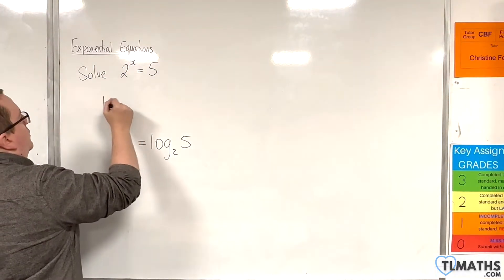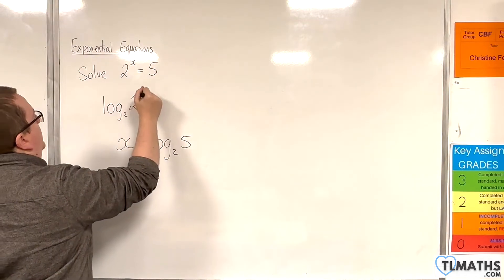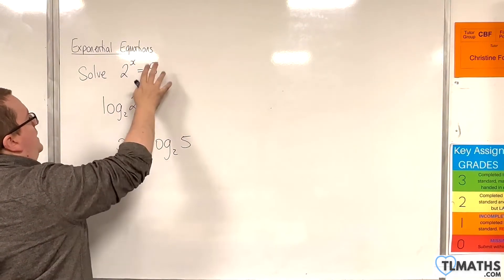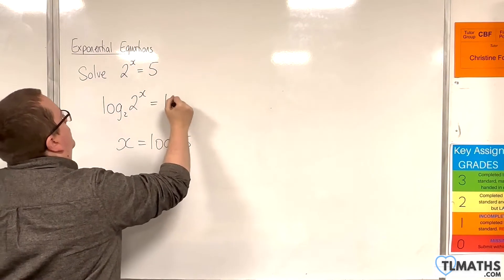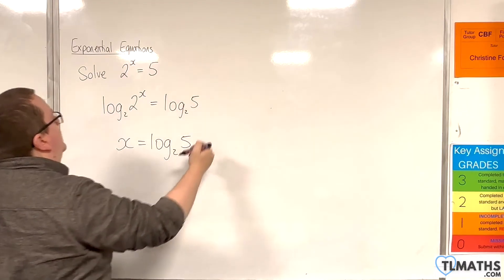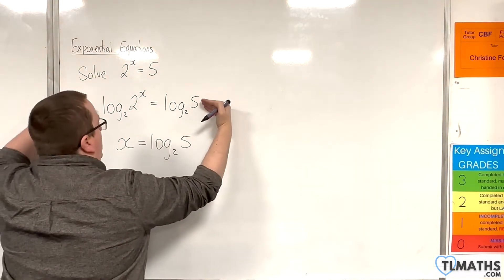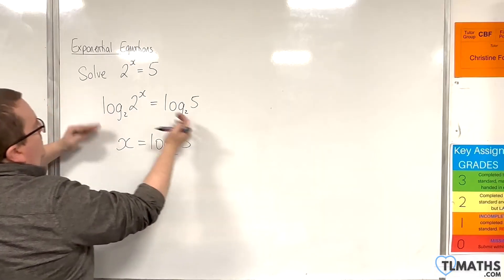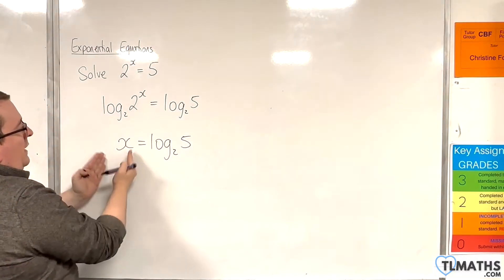So, log base 2 of 2 to the x, so log base 2 that side, and log base 2 that side, log base 2 of 5. And so, from this line of working, we get this line, because log base 2 of 2 to the x is equal to x.